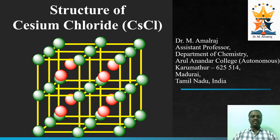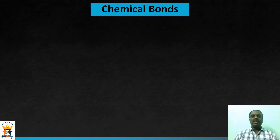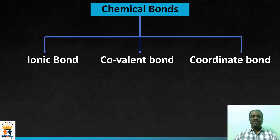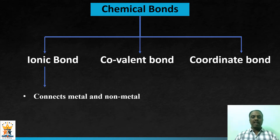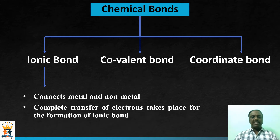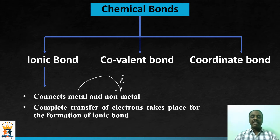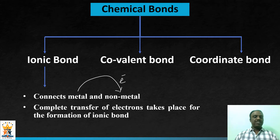In this video I am going to discuss the structure of an ionic compound, that is cesium chloride. Before going into the topic, let us briefly recall what an ionic bond is. It is a type of chemical bond — chemical bonds are classified into three major types: ionic bond, covalent bond, and coordinate bond. In particular, the ionic bond connects metals and nonmetals. During the formation of an ionic compound, complete electron transfer takes place: the metal atom loses electrons and the nonmetal atom gains electrons, leading to the formation of cations and anions. The electrostatic interaction between these positively and negatively charged ions results in the formation of an ionic compound.